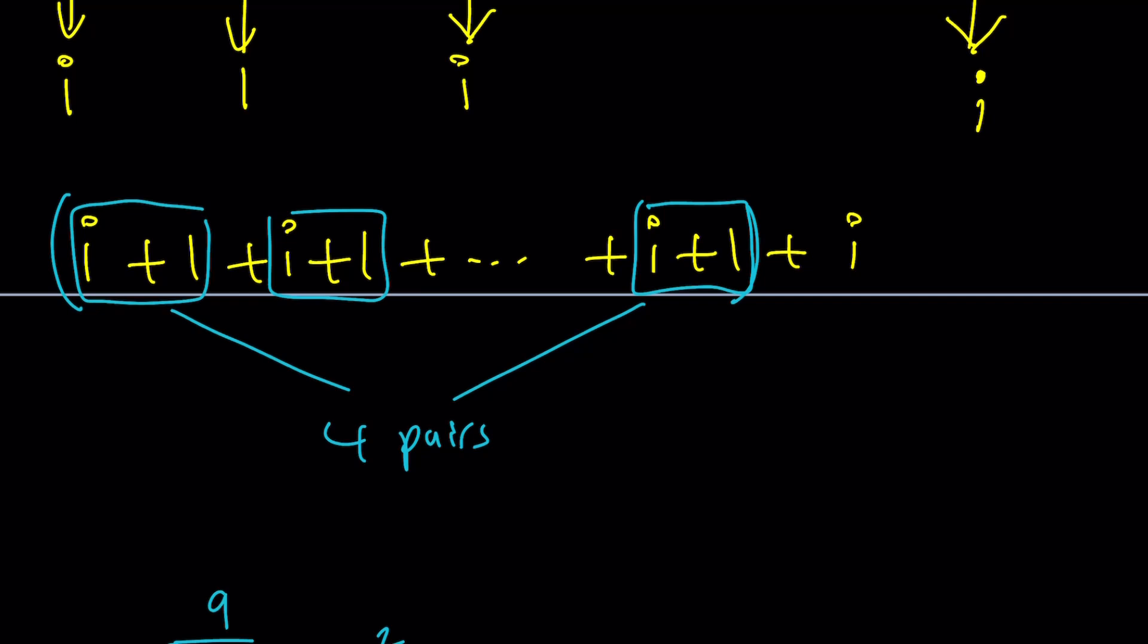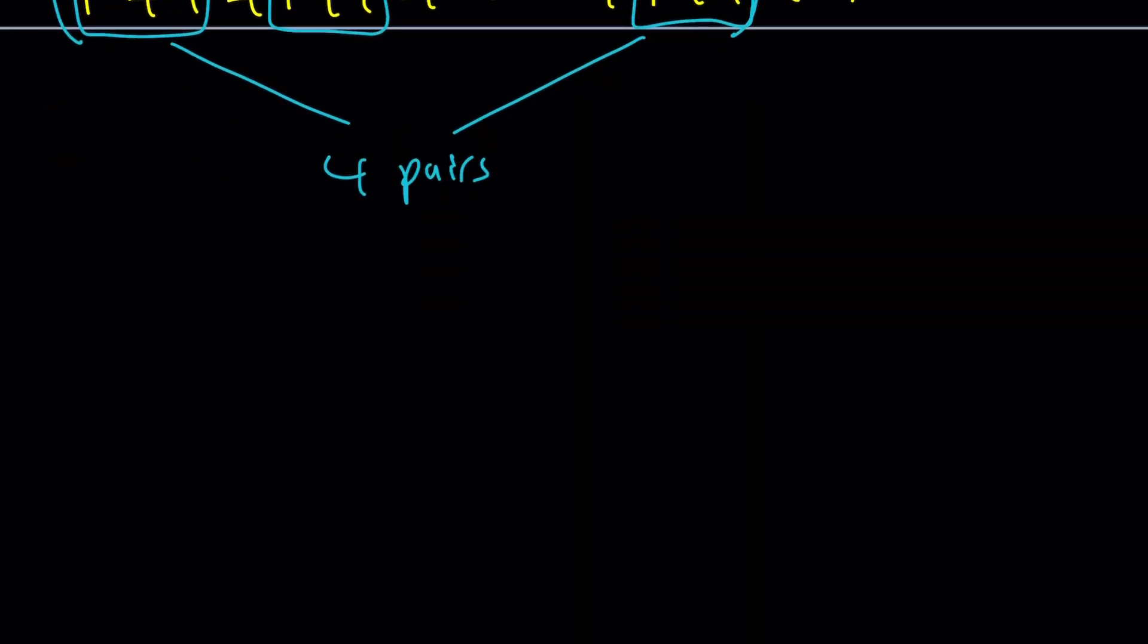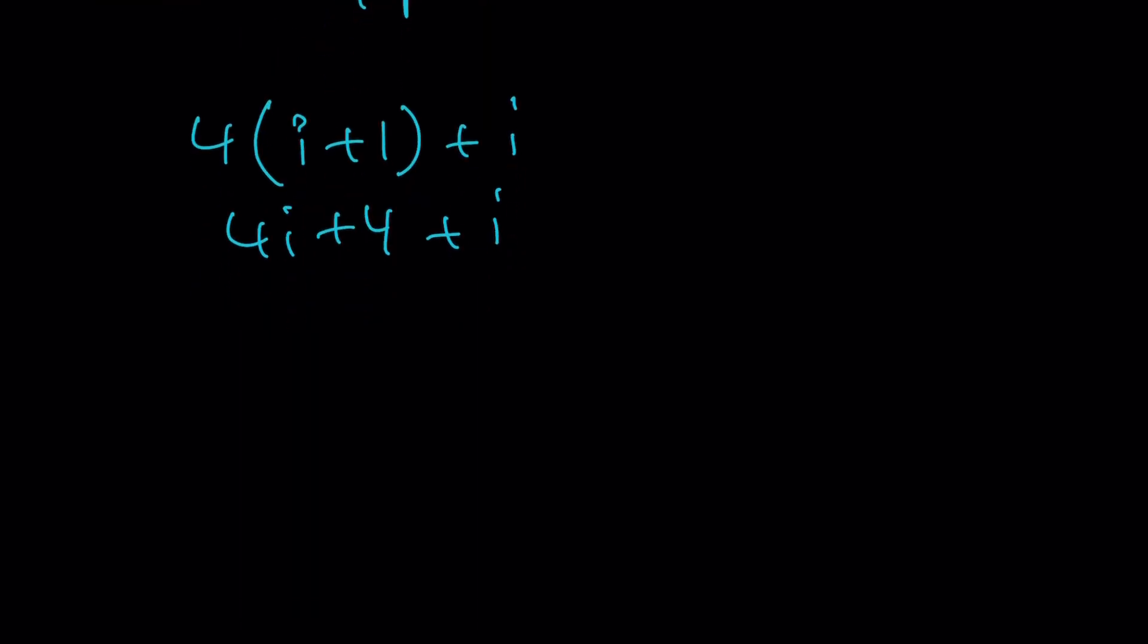So this is going to be equivalent to the following: 4 times i plus 1 plus i. It's going to be 4i plus 4 plus i. And then we can kind of write it as, I mean, I don't know where the 5 comes from. I just made it up. 4 plus 5i.